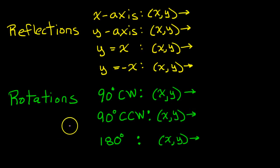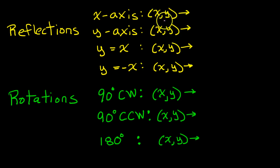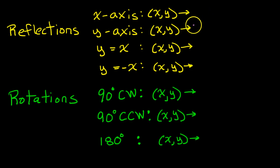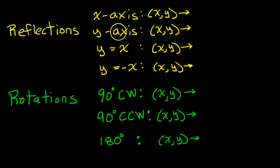When it comes to these transformations, there are several rules that can be described in terms of what will happen to a generic point x, y — what will happen to x, what will happen to y. Many of those are common sense, but a few of them are worth memorizing. So I suggest you memorize the ones that I'm about to go over on this list.